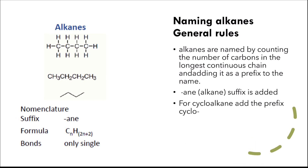For cycloalkanes, we add the prefix 'cyclo' before the prefix that refers to the number of carbon atoms. For example, a cyclic alkane with six carbon atoms is called cyclohexane. Remember that cycloalkanes are saturated hydrocarbons — even though they have a ring structure, they don't have any double bonds; they only have single bonds.